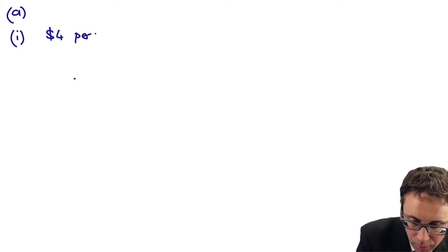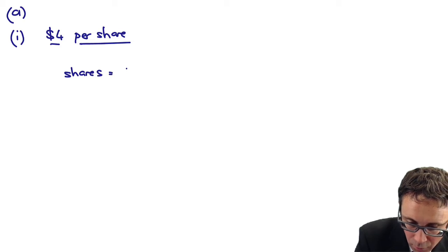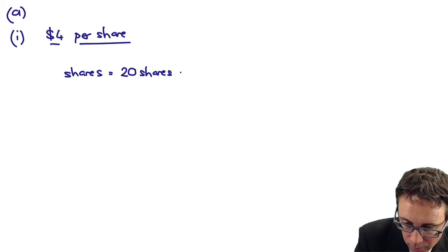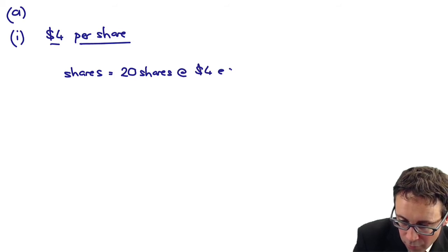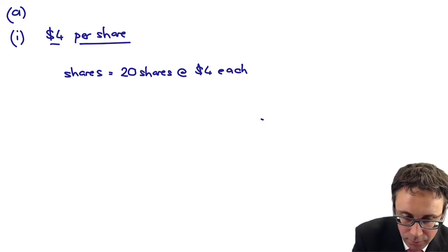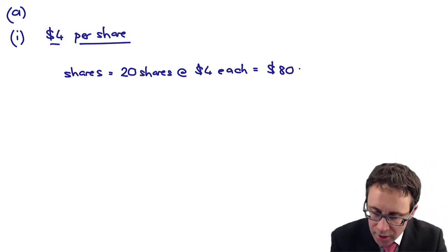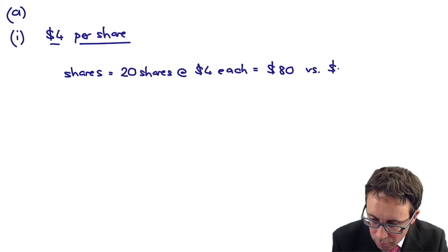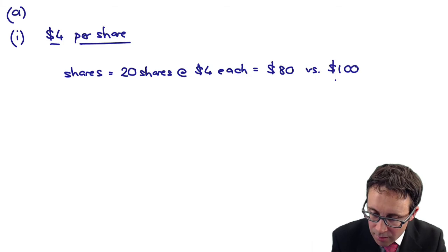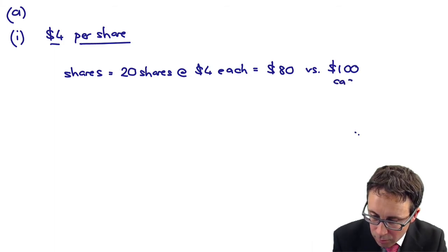Part A1: If it was $4 per share, then your shares would be 20 of them at $4 each, which gives me $80.